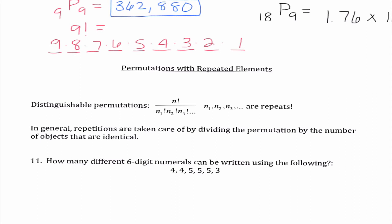Okay the final thing that we are talking about today is permutations with repeated elements. We call these distinguishable permutations. So the way that we do this it is n factorial over n sub 1 factorial n sub 2 factorial n sub 3 factorial when those are all repeats. So in general repetitions are taken care of by dividing the permutation by the number of objects that are identical.